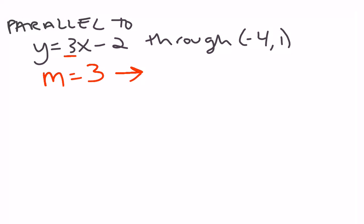Draw an arrow. I want the parallel slope. So what's my parallel slope to 3? Parallel means the same slope, so that's going to be 3.